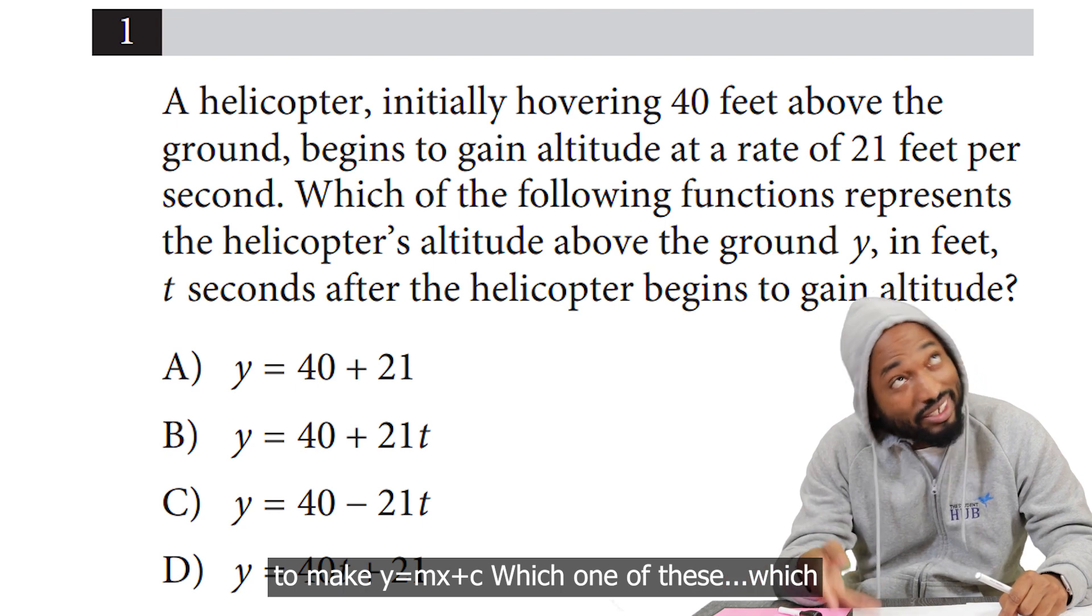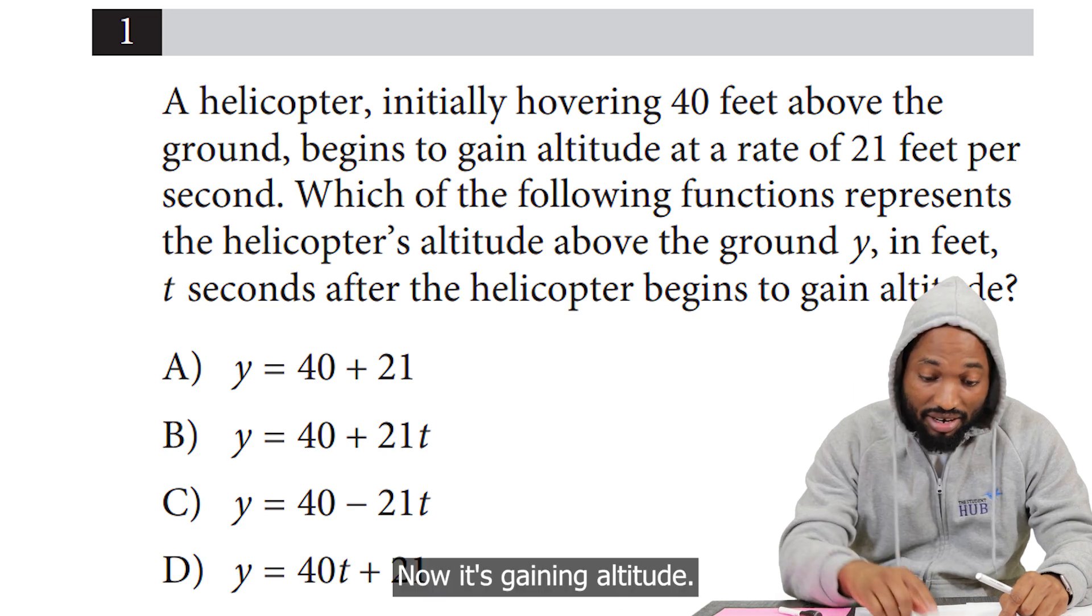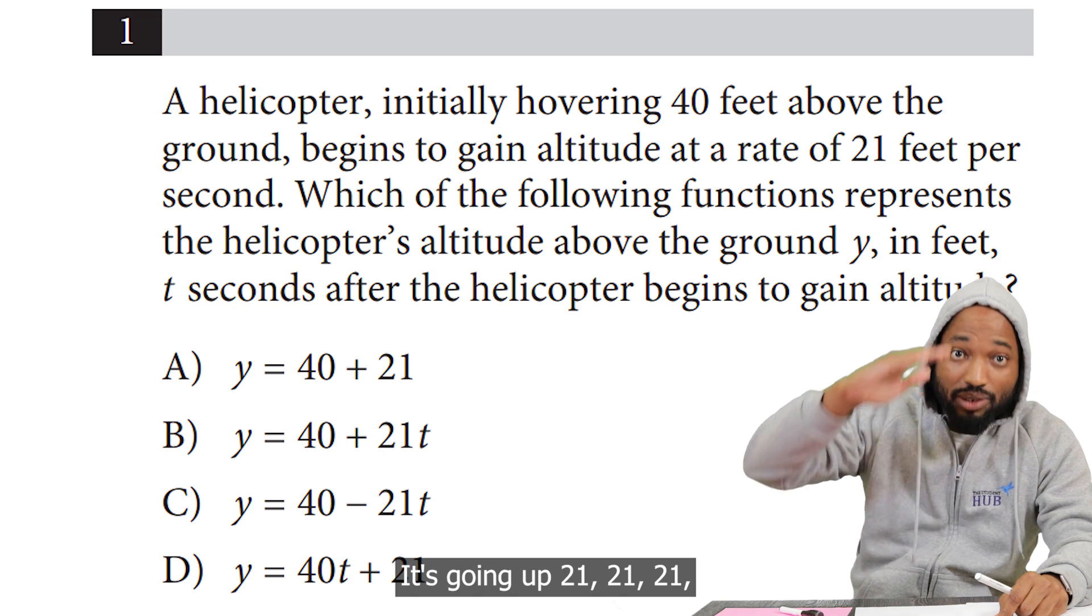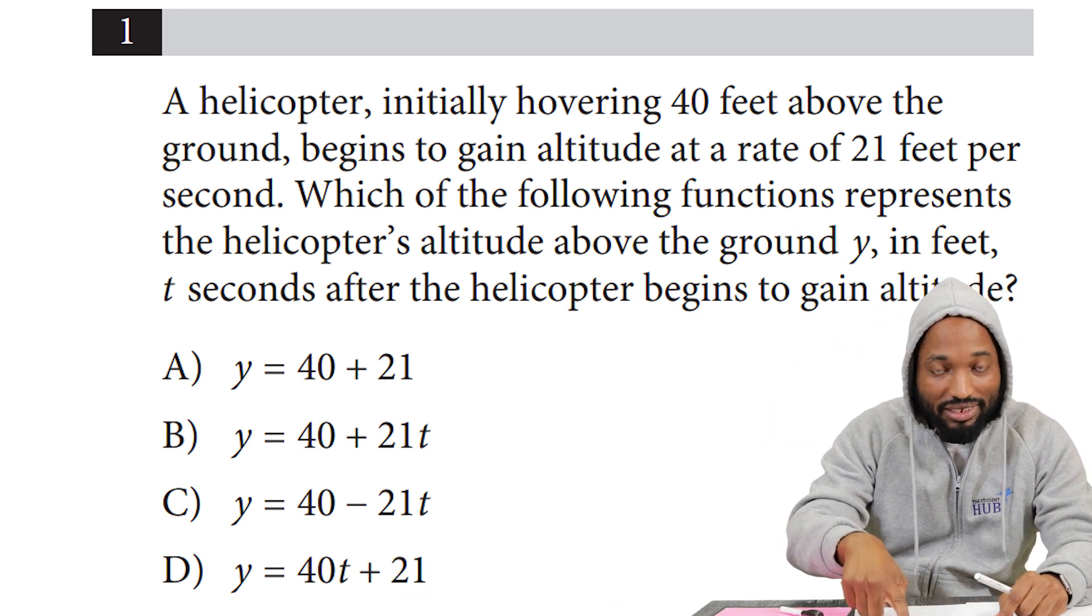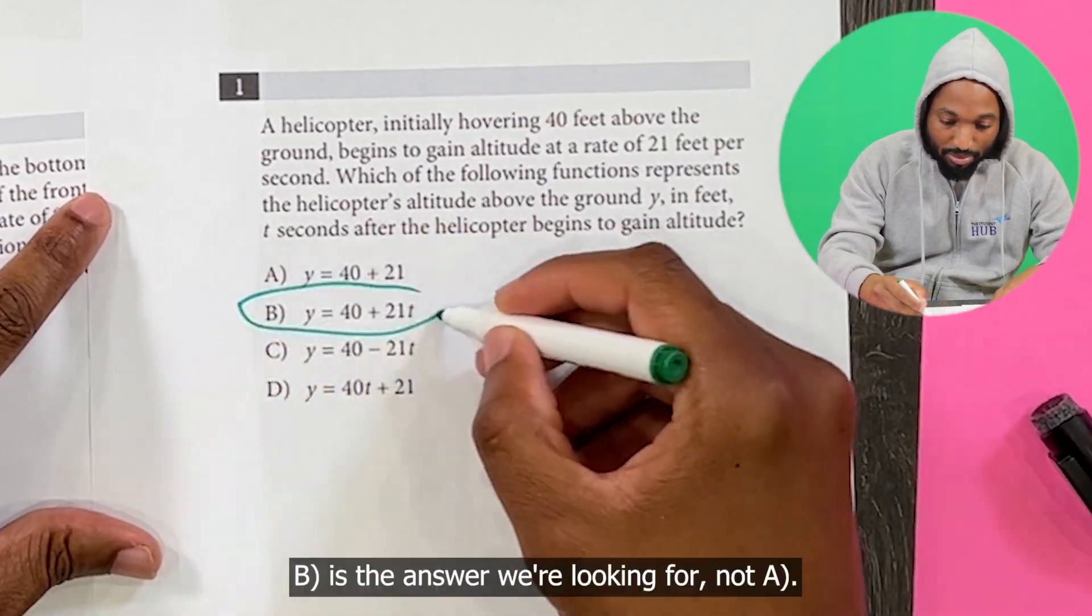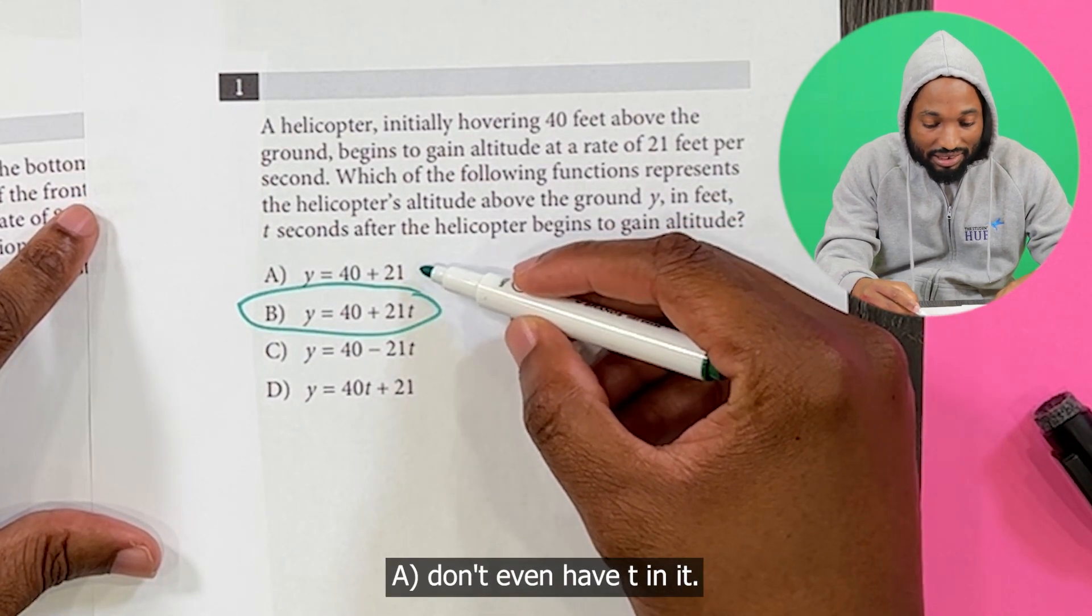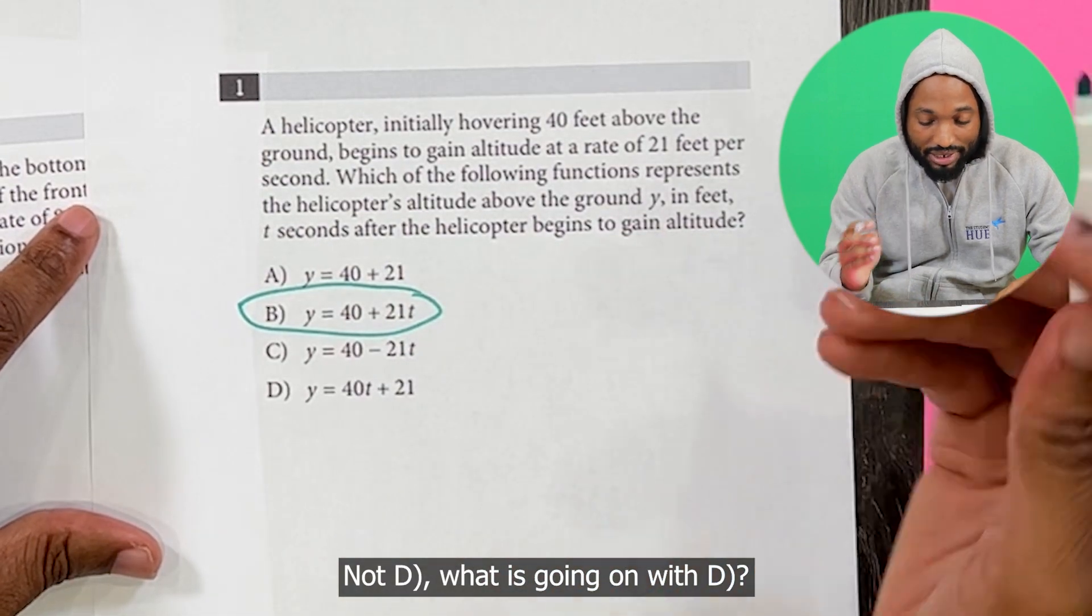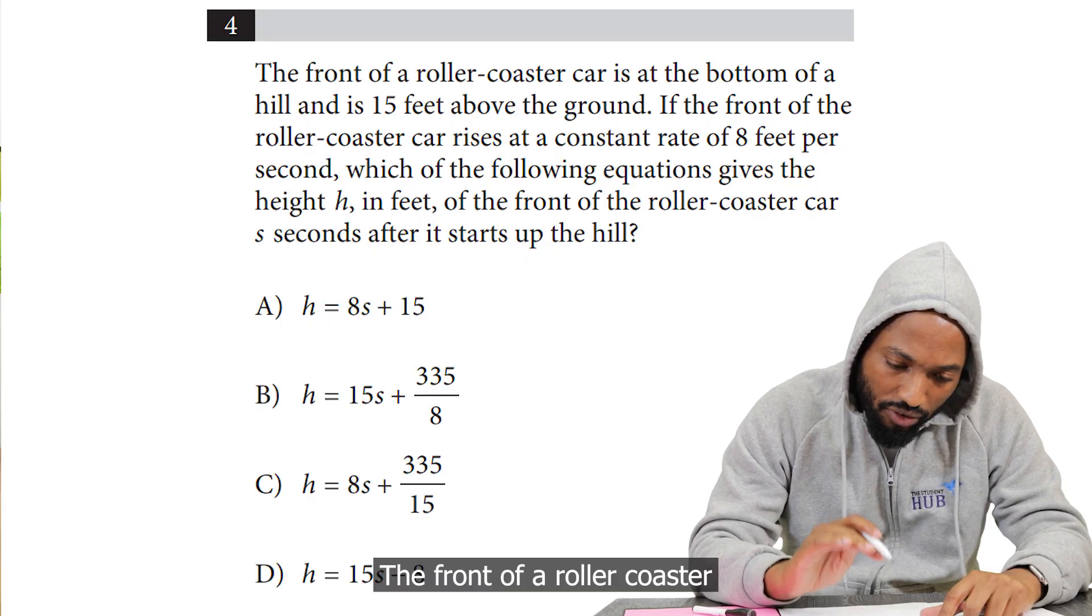Which one of these you think is m and which one you think is c? Now it's gaining altitude, so it means m is positive. It's going up 21, 21, 21, 21, and it started at 40 feet. So obviously B is the answer we're looking for. Not A—A doesn't even have t in it. Not C—C is negative. Not D, what is going on with D?